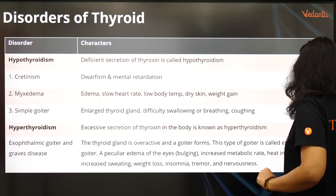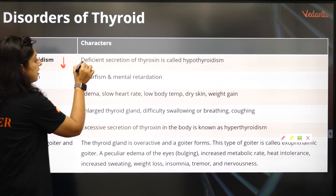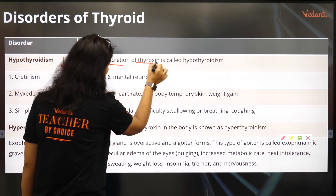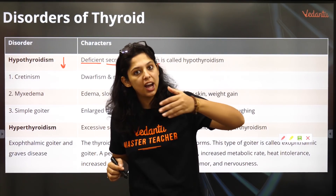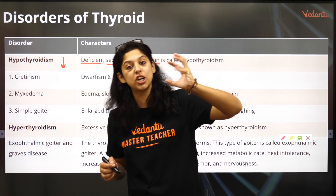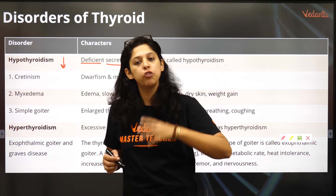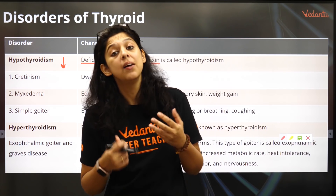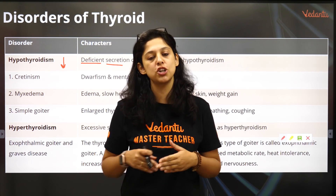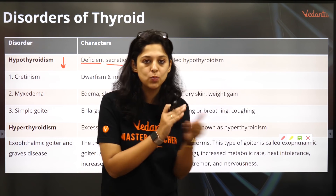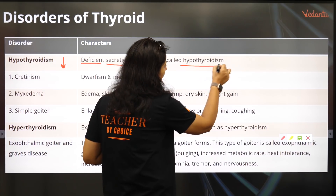Let's start with hypothyroidism. As the word says, hypo means decrease. So there is a deficient secretion of thyroxin, a deficient secretion of T3 and T4. T3 stands for triiodothyronine and T4 stands for tetraiodothyronine, which are hormones produced by the thyroid gland. The thyroid gland requires iodine to function properly, as you can tell from the words triiodo and tetraiodo. So when hormone production is less, it is called hypothyroidism.